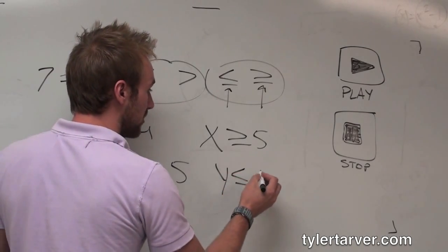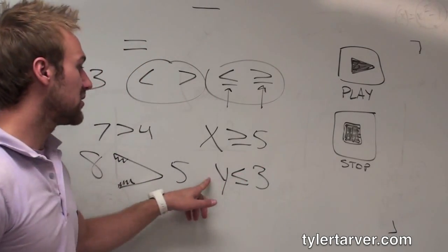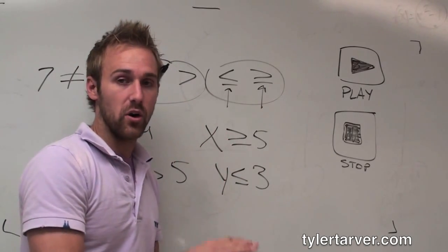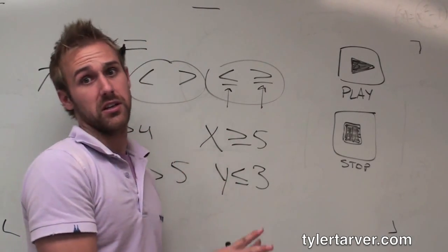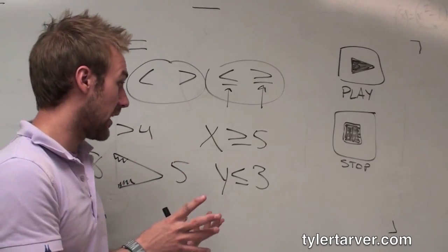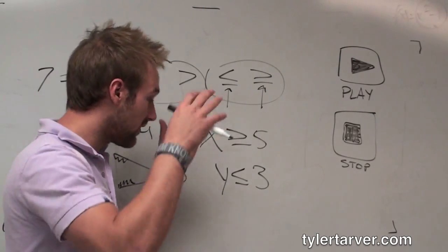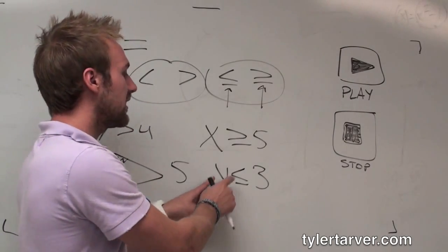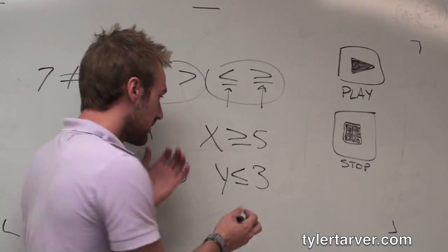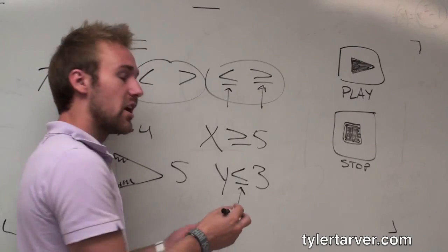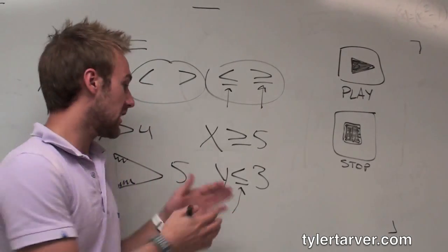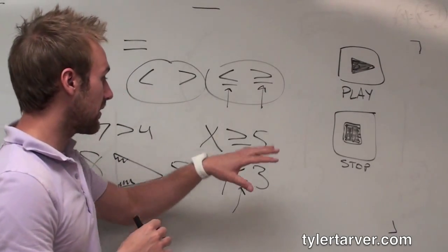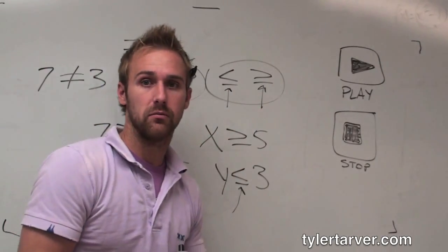Say y is less than or equal to 3. That means y is everything smaller than 3. It can be 2, 1, 0, negative 1, negative 1.5, negative 2 billion, or negative jack-o-lantern - I don't know. It can be anything below 3. Negative jack-o-lantern is not an actual answer, don't put that down. It's anything less than 3. But since it has this line right here, it means or equal to. So you say y is less than or equal to 3, so it can be anything that is 3 or below.